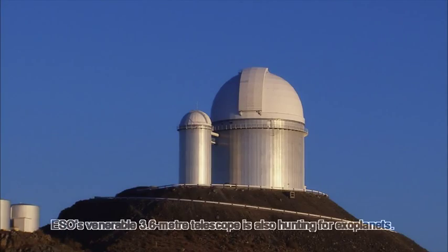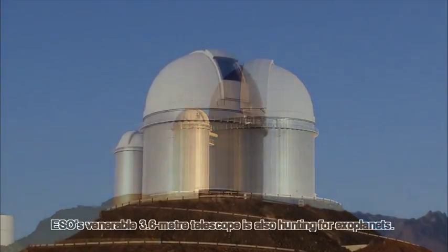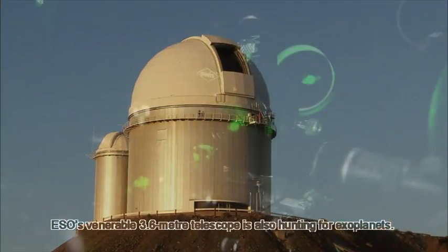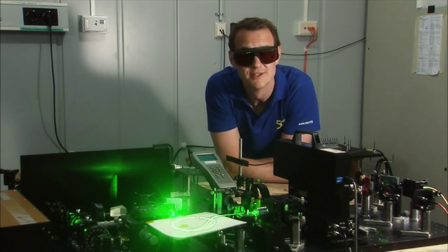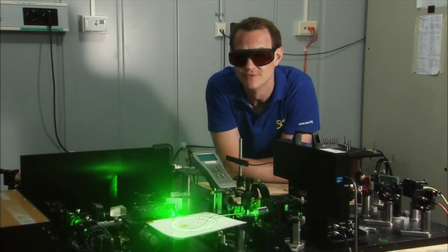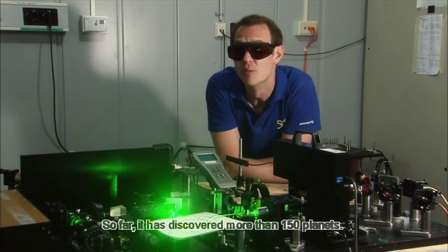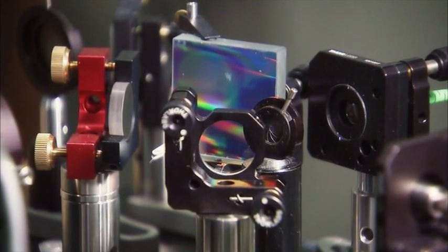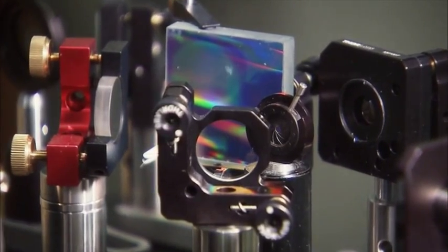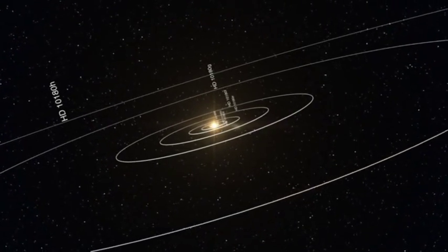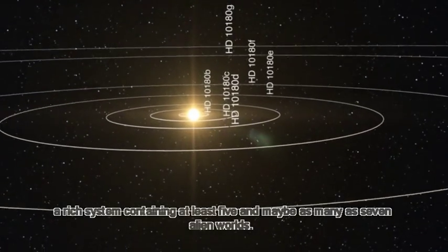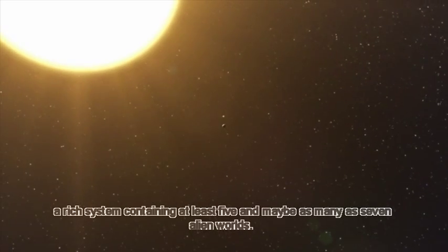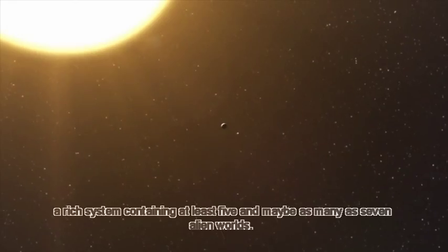ESO's venerable 3.6-meter telescope is also hunting for exoplanets. The HARPS spectrograph is the most accurate in the world. So far, it's discovered more than 150 planets. Its biggest trophy: a rich system containing at least five, and maybe as many as seven, alien worlds.